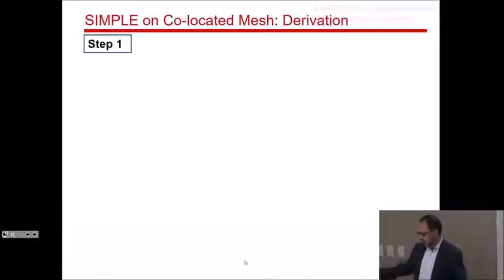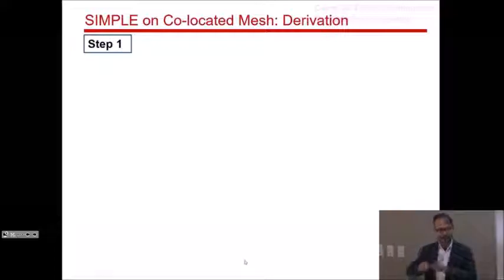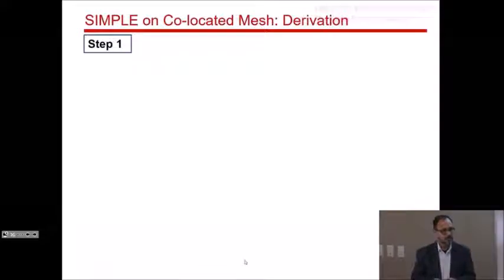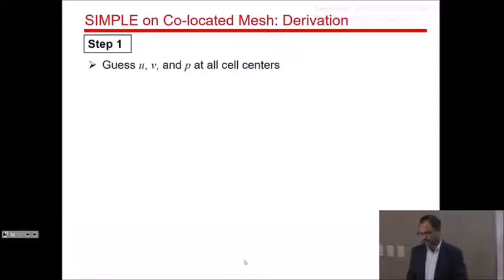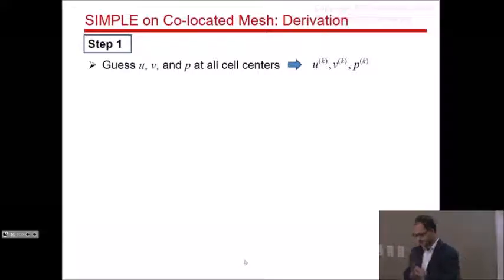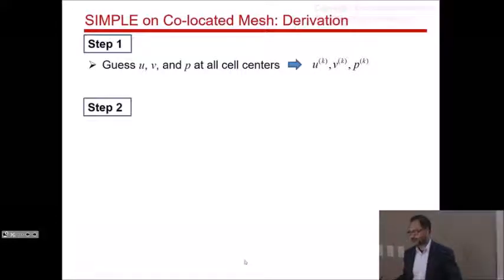Now let's go over the derivation of the SIMPLE algorithm for a co-located mesh. You already know the SIMPLE algorithm, so the overall algorithm is not going to change — only certain steps will change. Step one, just like before, is to start with a guess of u, v, and p at all cell centers. Remember, these cell centers are co-located, using the outer iteration index k in parentheses.